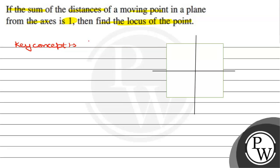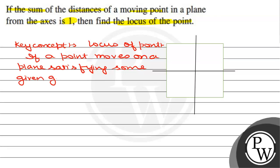Key concept is locus of point. If a point moves on a plane satisfying some given geometrical condition, then the path traced out by the point in the plane is called its locus.